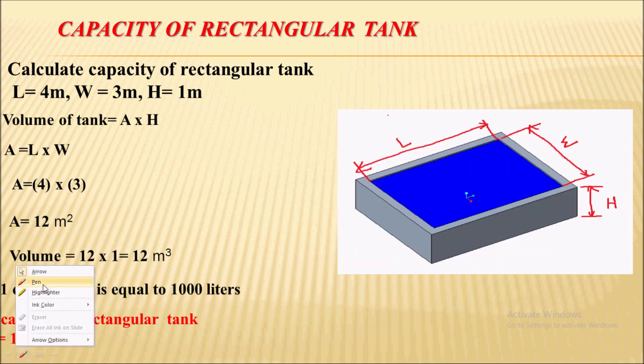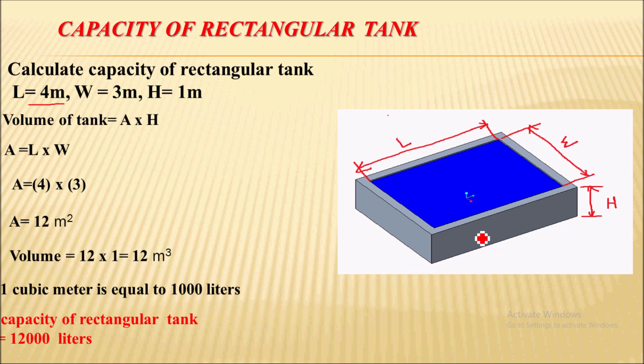The example is calculate the capacity of rectangular tank if the length of this tank is 4 meter, width is 3 meter and height is 1 meter. So here we have provided with the internal dimensions of this rectangular tank. Length is equal to 4 meter, width is 3 meter. So this width is 3 meter and height is 1 meter.